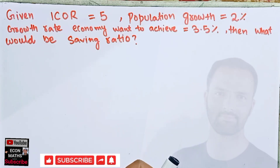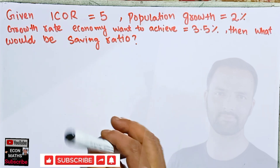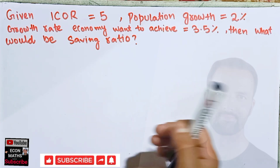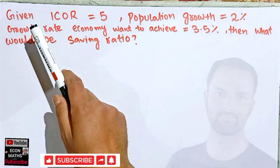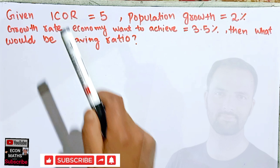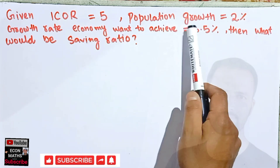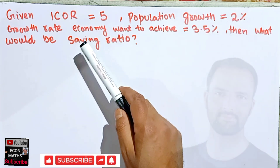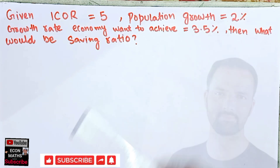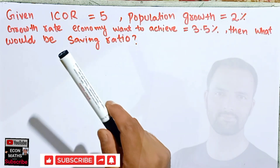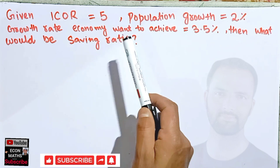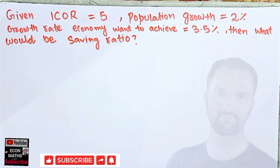In this video we will try to solve a question on finding the saving ratio from the given ICOR — that is incremental capital output ratio — population growth, and the growth rate of an economy. The question is: given incremental capital output ratio is equal to 5, population growth is 2%, and the growth rate the economy wants to achieve is 3.5%, we have to find the level of the saving ratio.